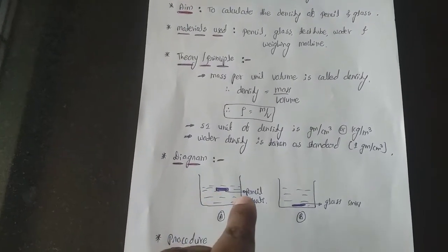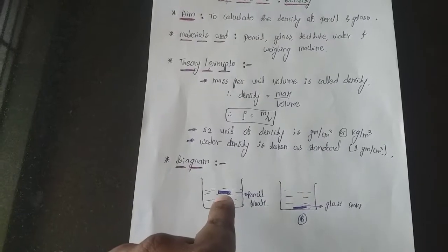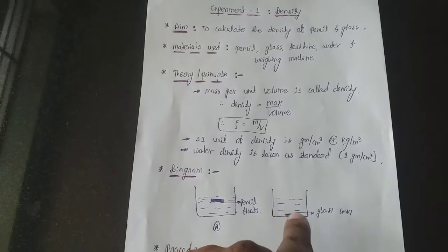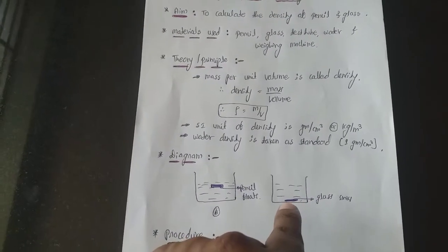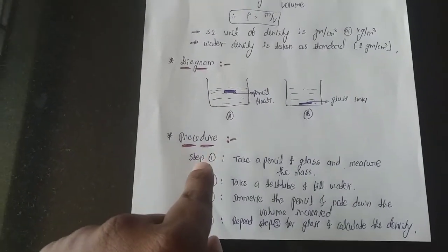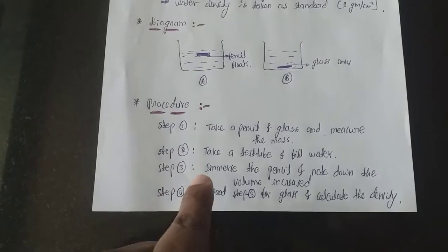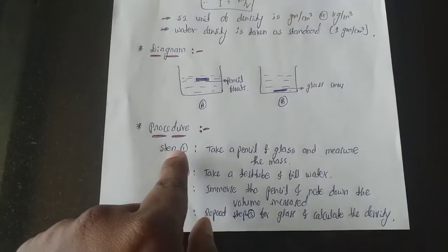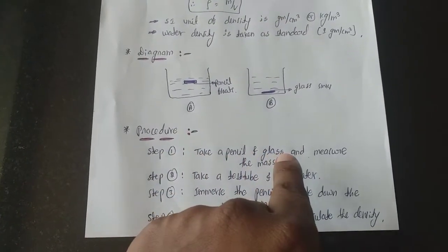So here, pencil floats. In diagram A, the pencil floats, and diagram B, the glass sinks. Then you have to mention procedure, how you have performed the experiment. Step 1: take a pencil and glass and measure their mass. Step 2: take a test tube and fill water.